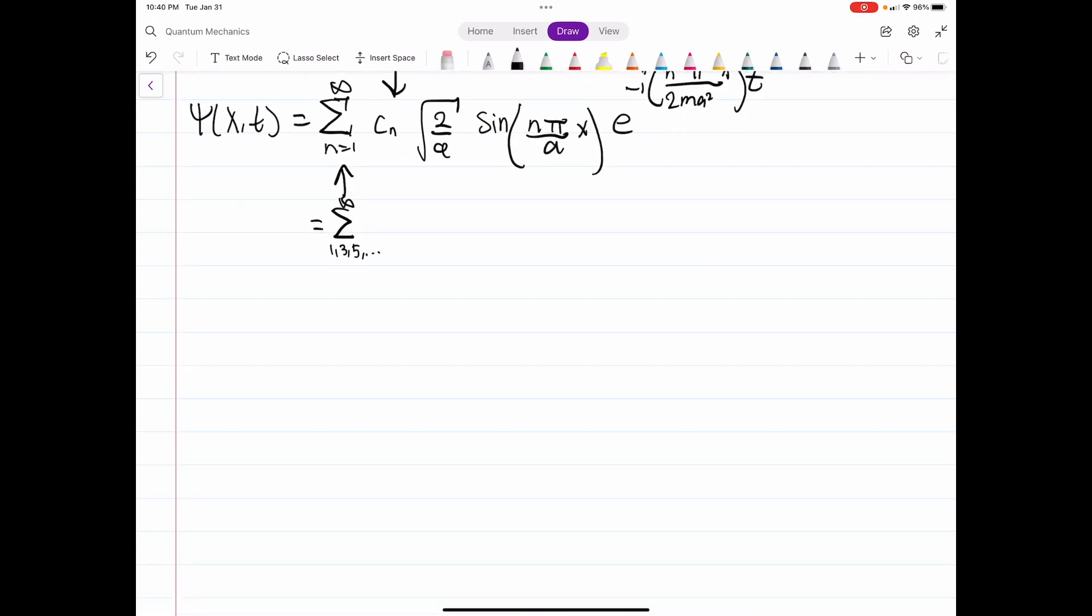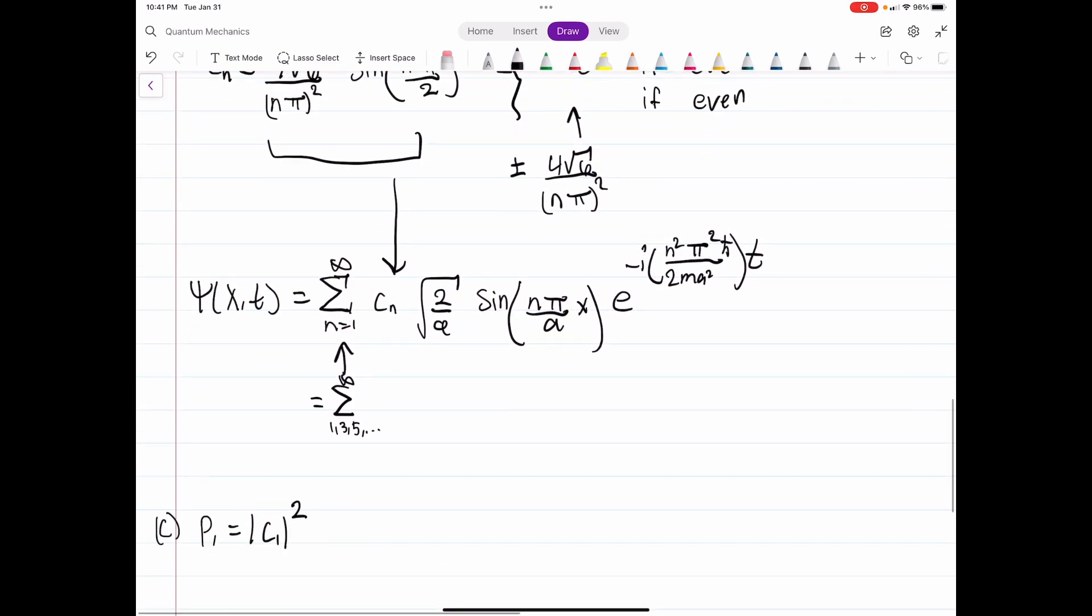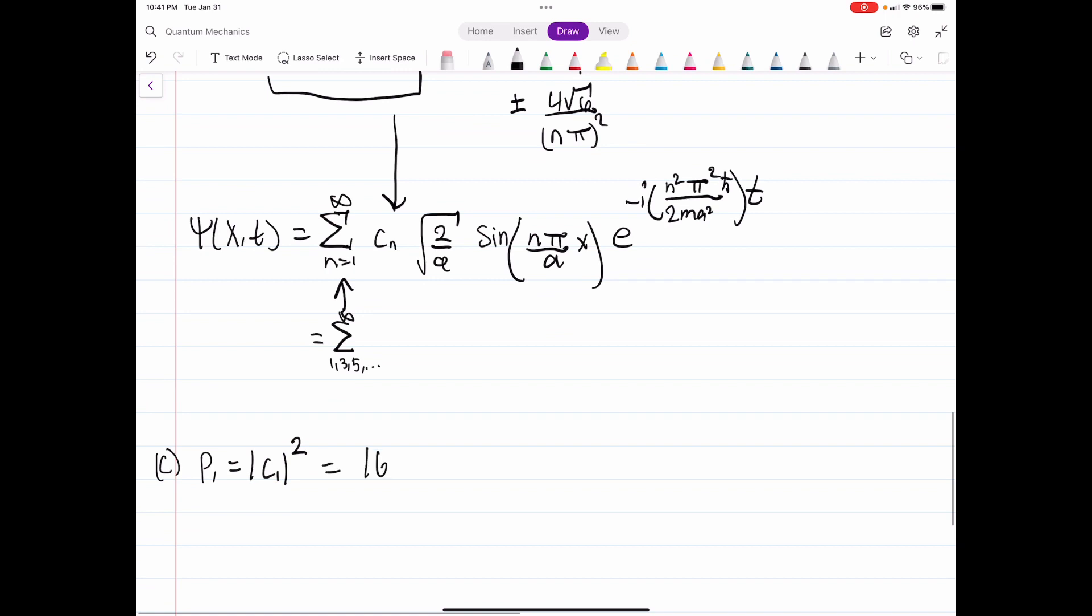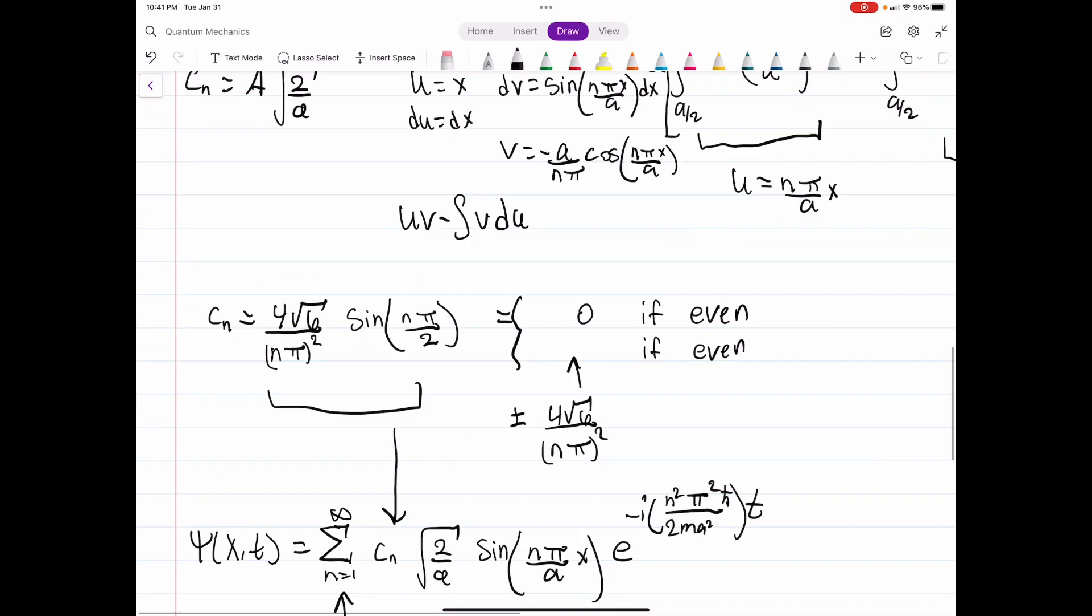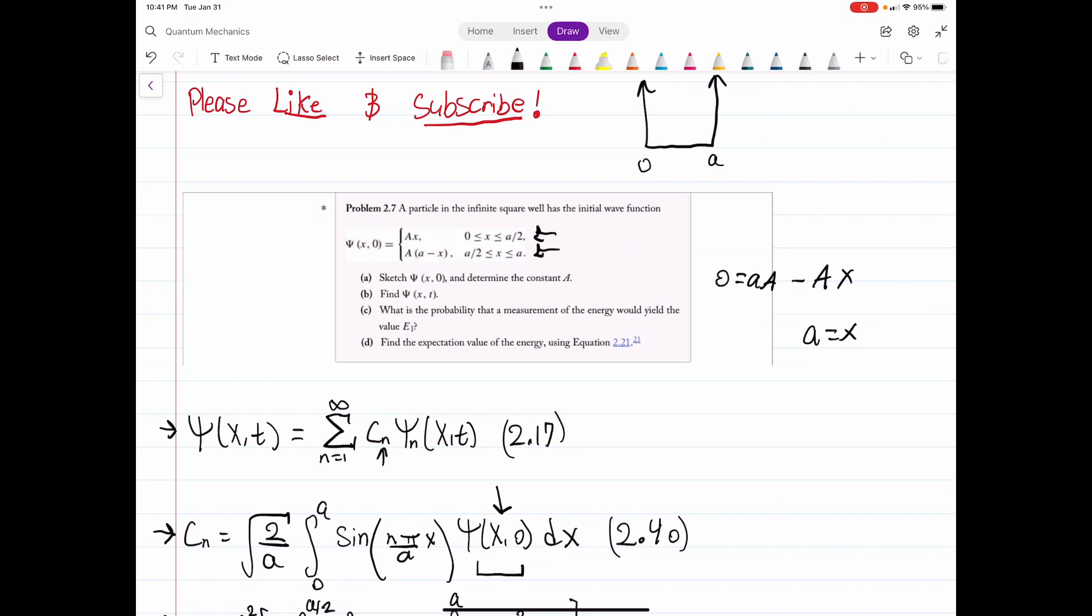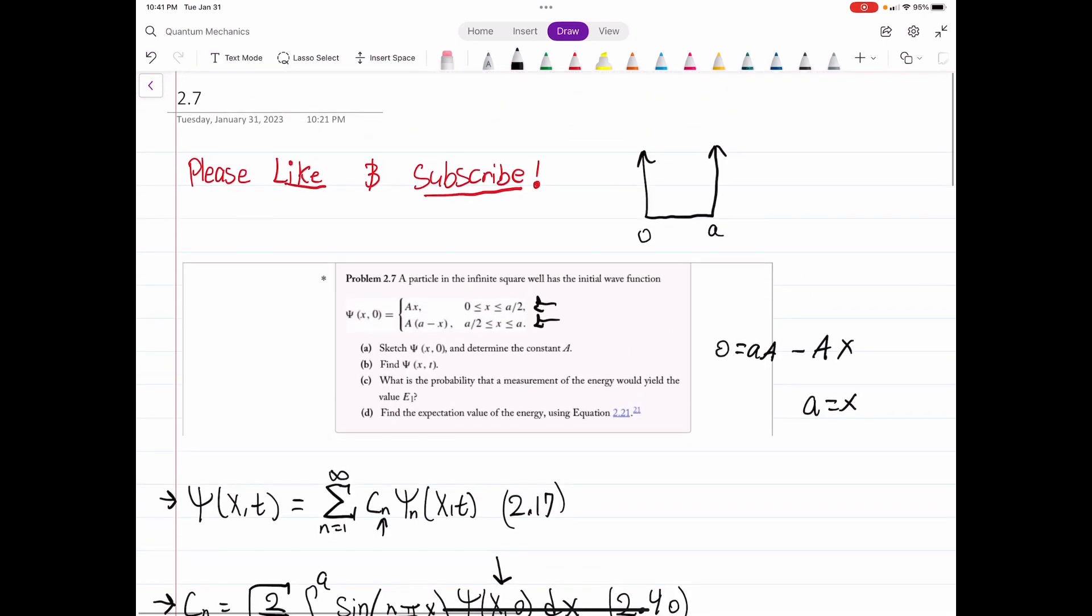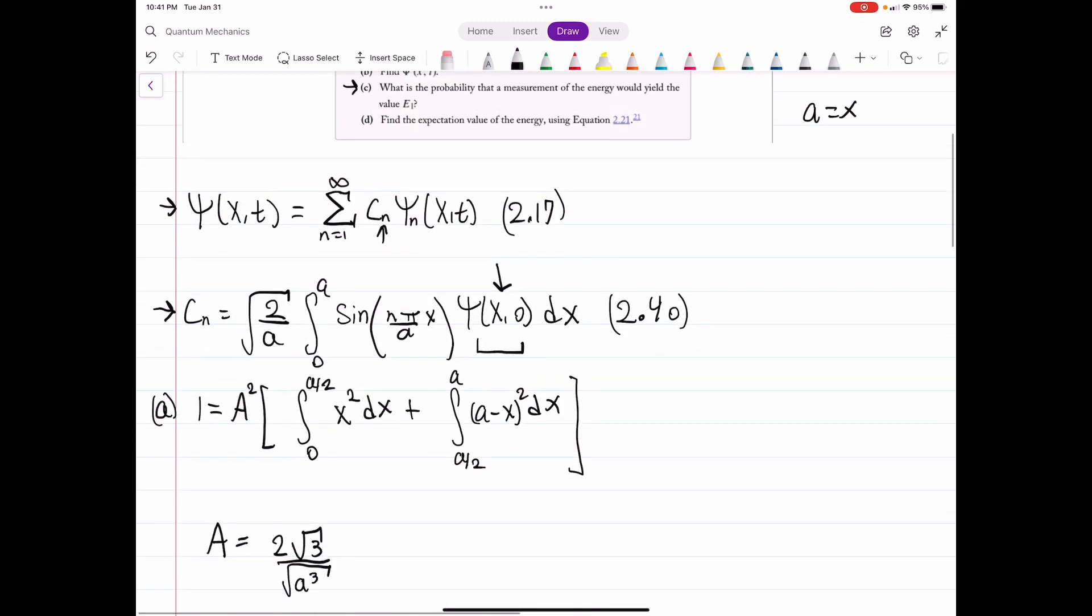C is also asking for the probability. So the probability is related to those constants that we just found. Also another good reason to find it. So it's just, if we look at our C, which we have here, for n equal 1, and that times its complex conjugate, which is just that, is going to be equal to 16 times 6 over 1 squared pi squared, which is about 0.99 or 99%. So the probability that a measurement of energy would yield e1 is, your ground state, or not 100%, I'm sorry, 99%. So there's a 99% chance that you measure the ground state.